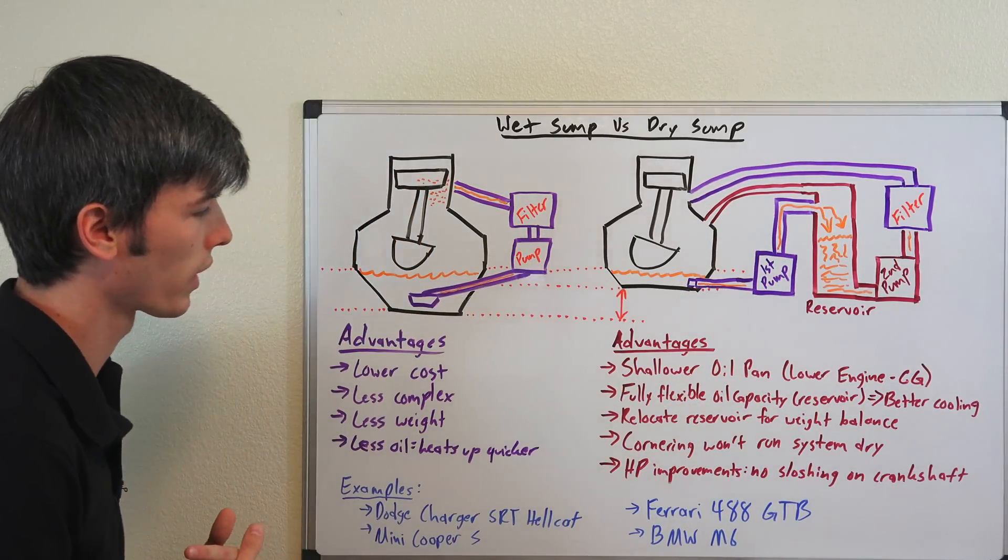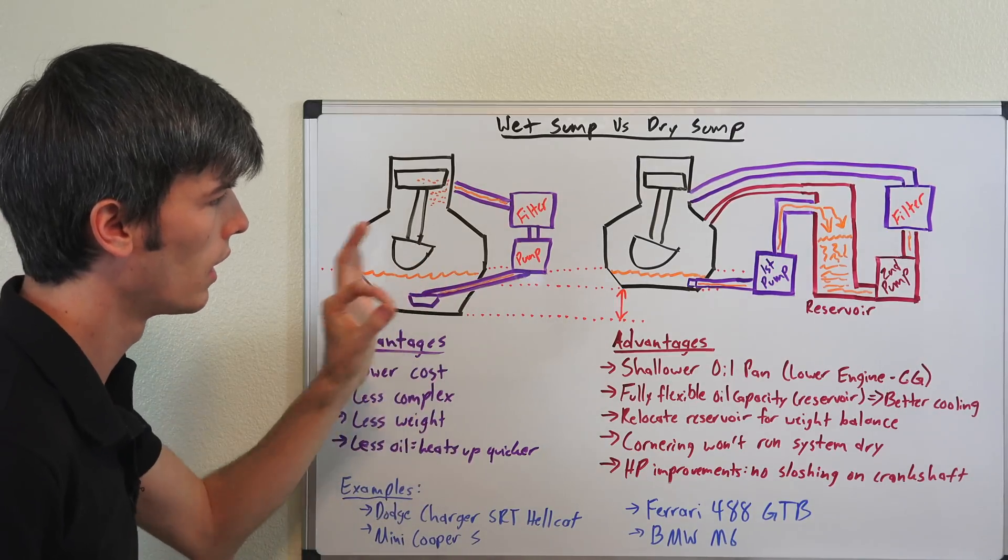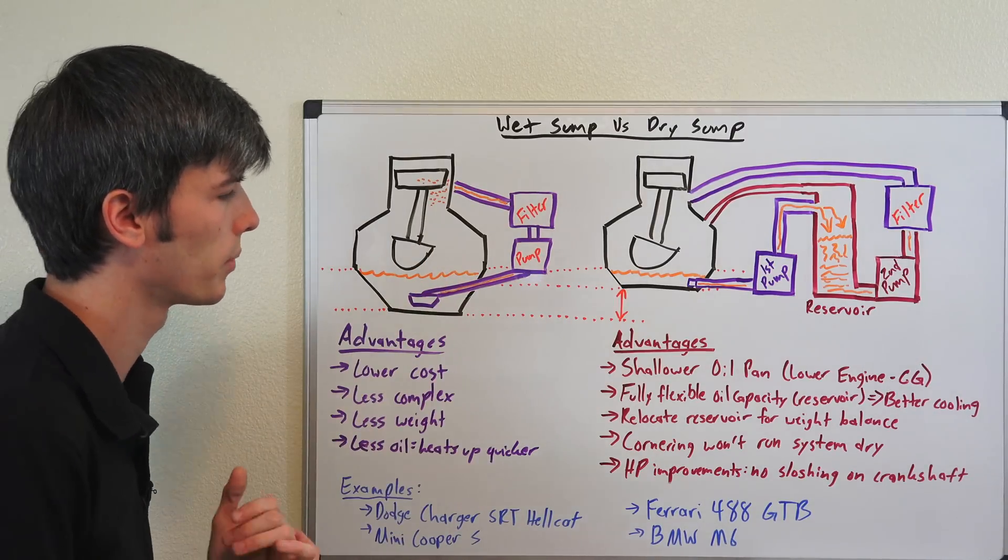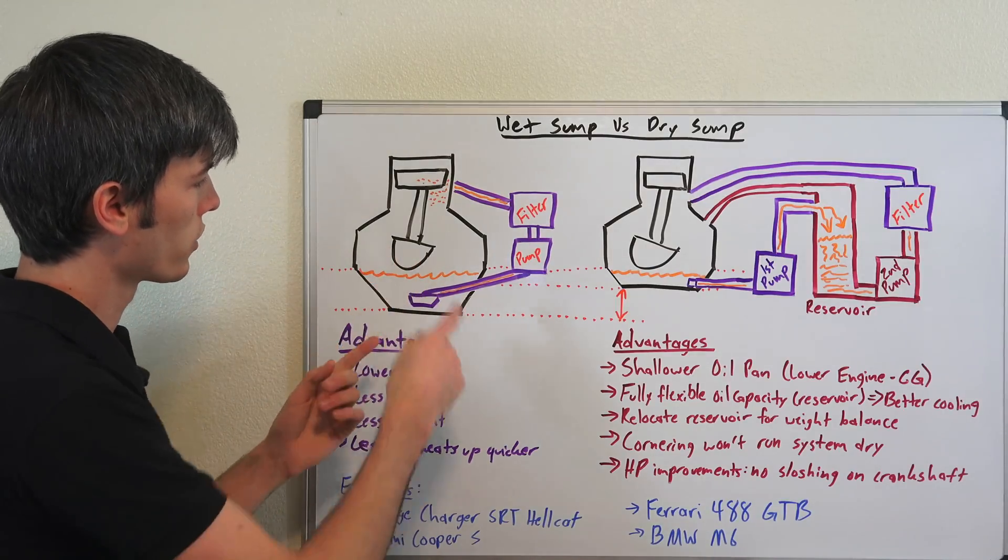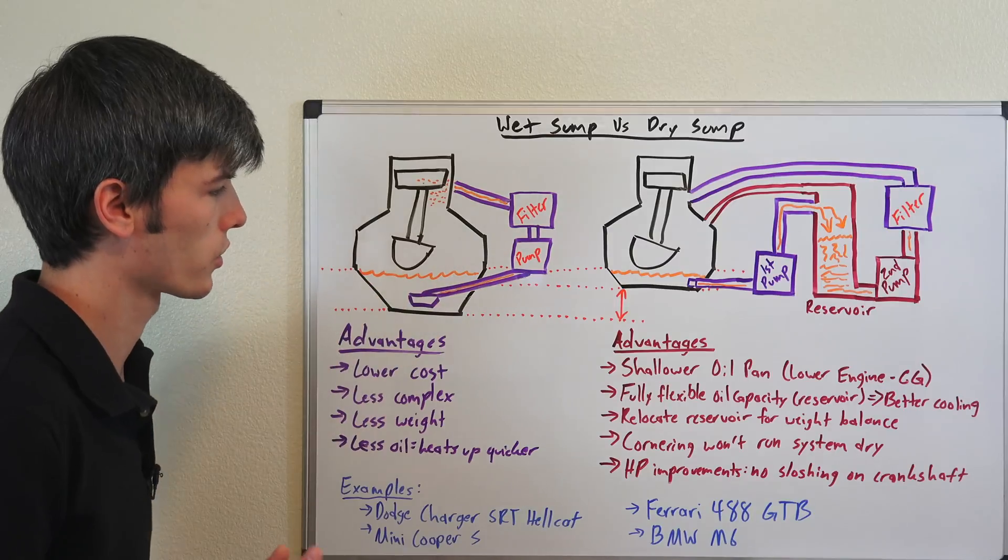There's also a small horsepower benefit of using a dry sump system where you're not going to have this oil sloshing on the crankshaft, and so that's going to be taking away power as that crankshaft sloshes through the oil if it indeed does do that.